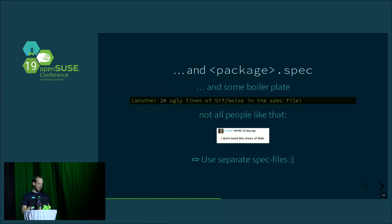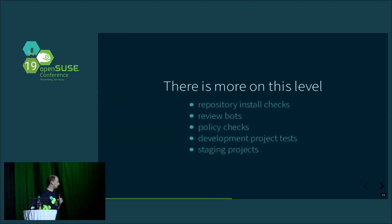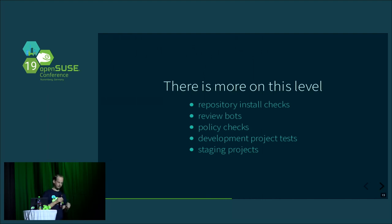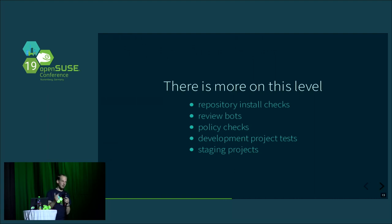Still at the package/project level: there are repository install checks that verify whether generated repositories are installable — similar to what I showed for single packaging, but checking whether all packages install together. This is done for example when a new Tumbleweed snapshot is created, or for Leap. There are also review bots — a famous example being the legal bot, which checks whether licenses of all source files are correct — and further policy checks regarding package inheritance, ensuring a Leap package comes from the right source.